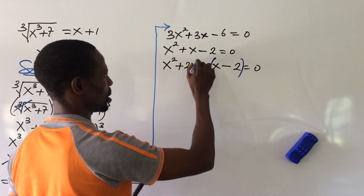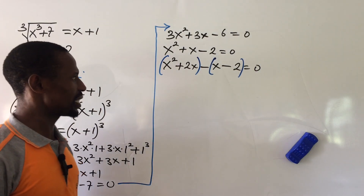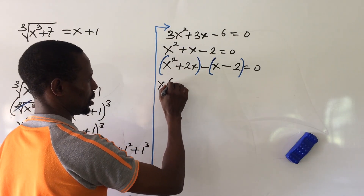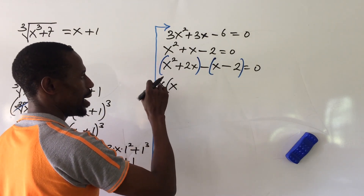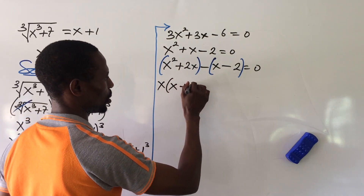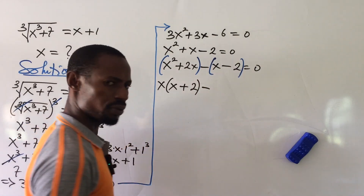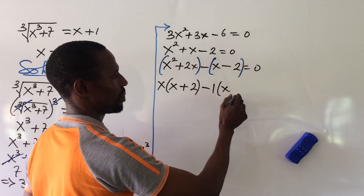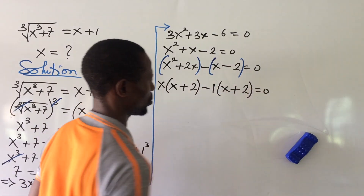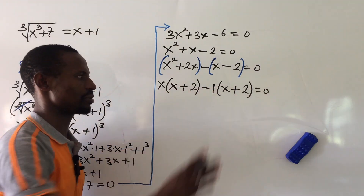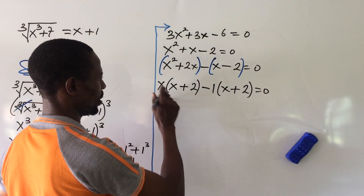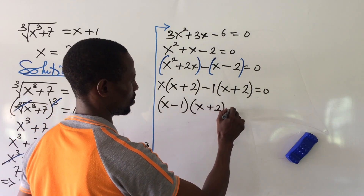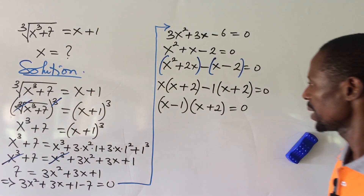We group and factor: x(x + 2) − 1(x + 2) = 0. Since both brackets are the same, we factor them out to get (x − 1)(x + 2) = 0.